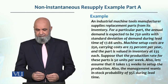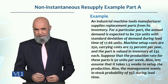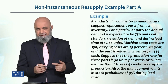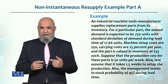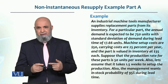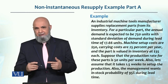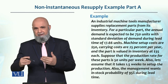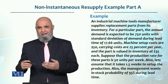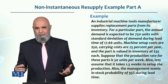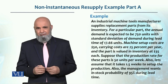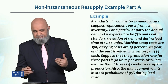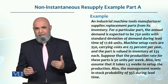Suppose that the production rate for these parts is 50 units per week. Production rate is given in weekly terms, but demand is given in annual terms. We cannot use the P divided by P minus D formula when P and D are given in different time units. So we have to convert demand into weekly demand.